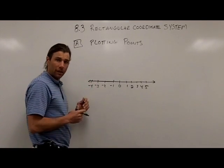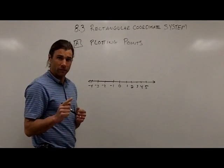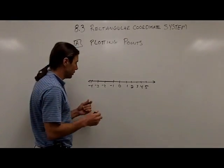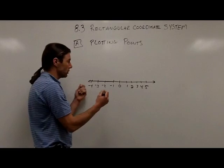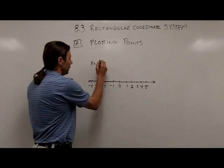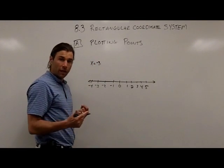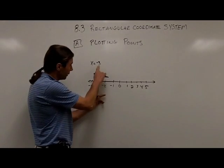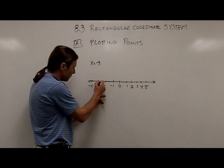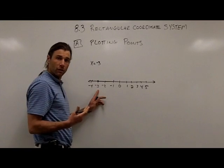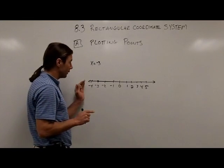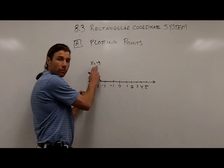To graph on the number line, all I need is one piece of information, because we're talking about one dimension. And one line is one dimension. So if I give you something like x equals negative 3, you know to graph on the number line, all I have to do is come over here to negative 3 and put a dot for that point at negative 3. So a one-dimensional graph, the number line, we need one piece of information.